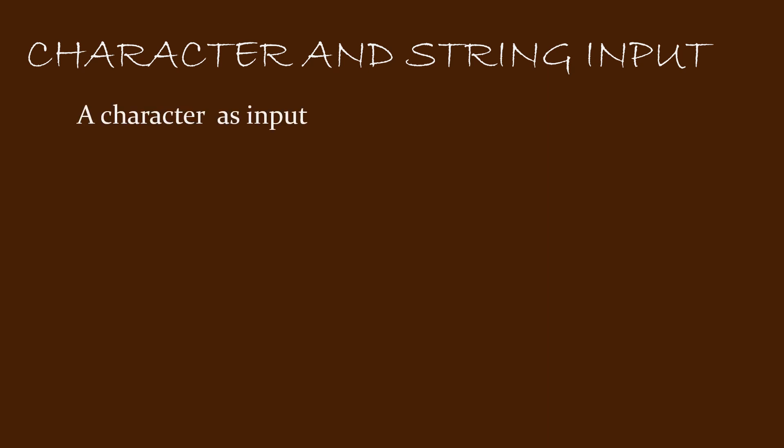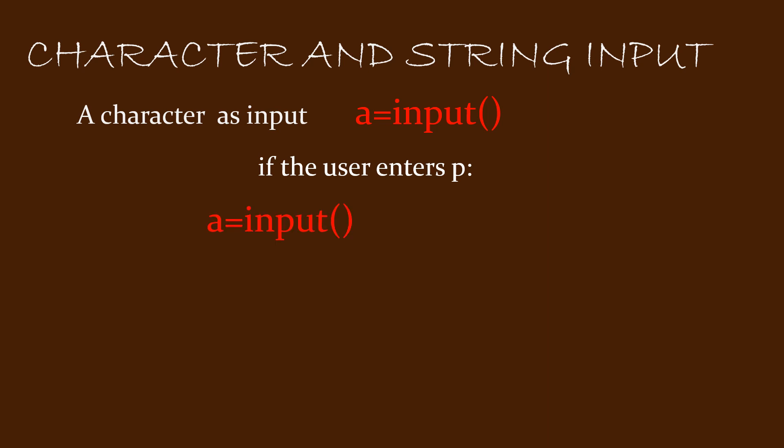A character is anything single — it could be an alphabet, a single digit, or a symbol, and a character is generally written within single quotes. To take a character as input, we use: variable name equal to input open close bracket. If you have a line as any variable equal to input open close bracket, the computer will understand it has to ask for a character input. Suppose you enter p — the value p is stored in the variable a, so a equals character p.